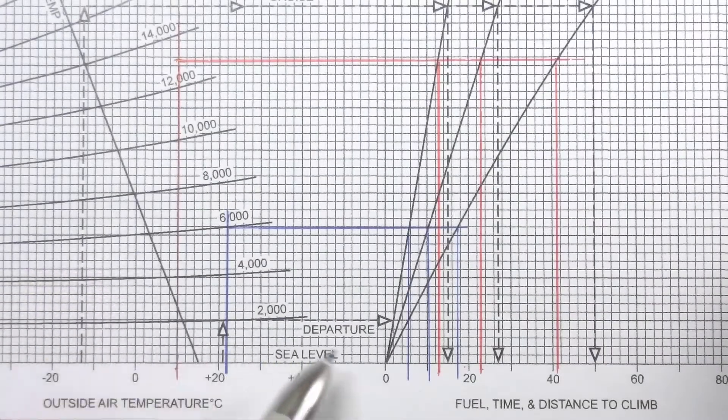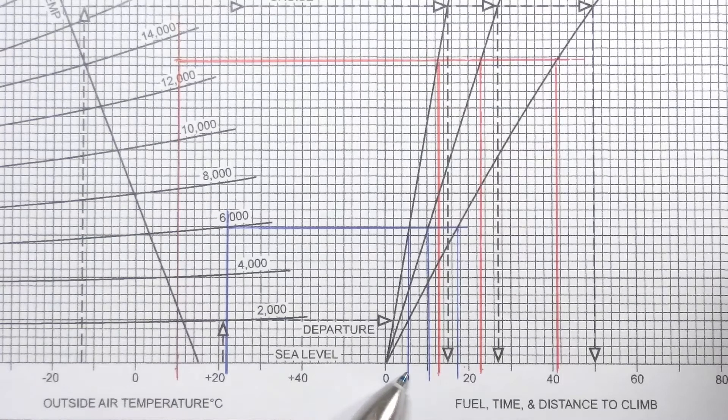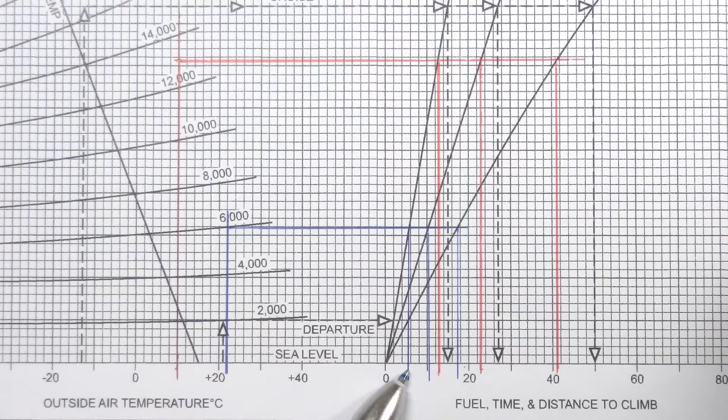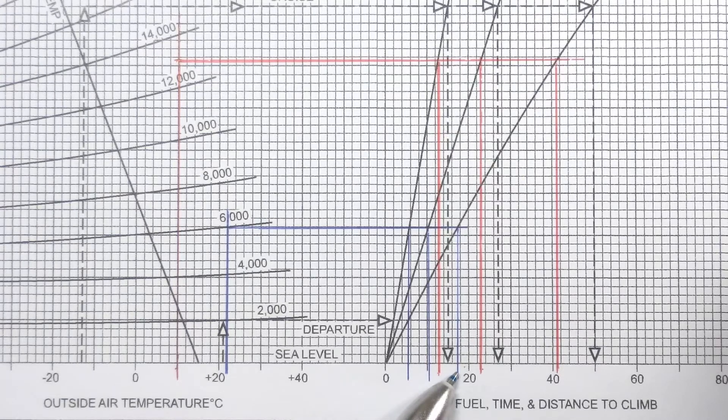And if we read the scale carefully we would have about five and a half gallons, 10.1 minutes, and 17 and a half nautical miles.